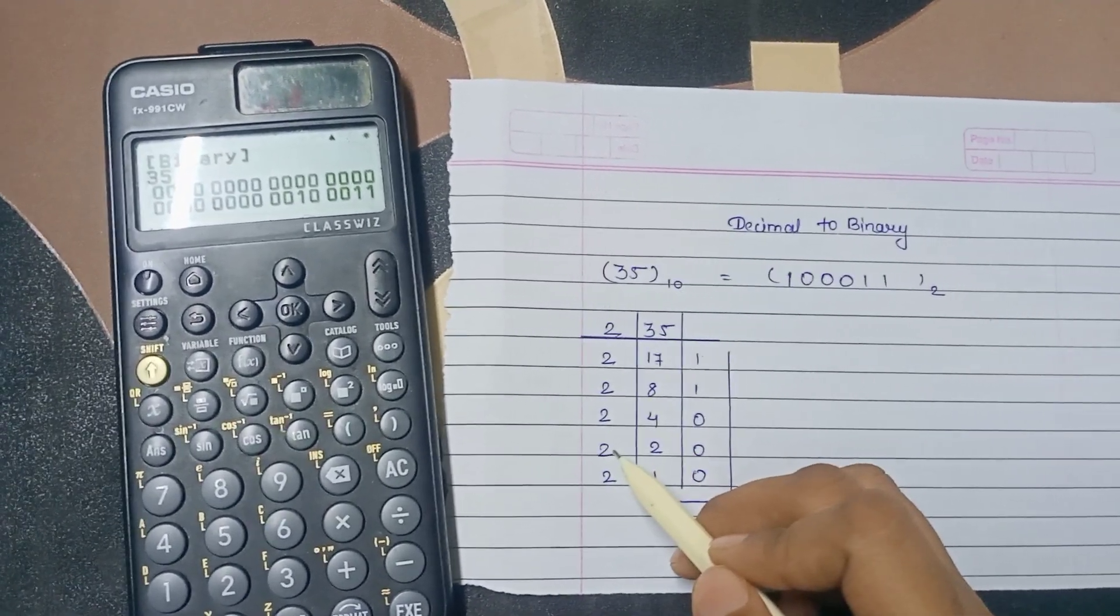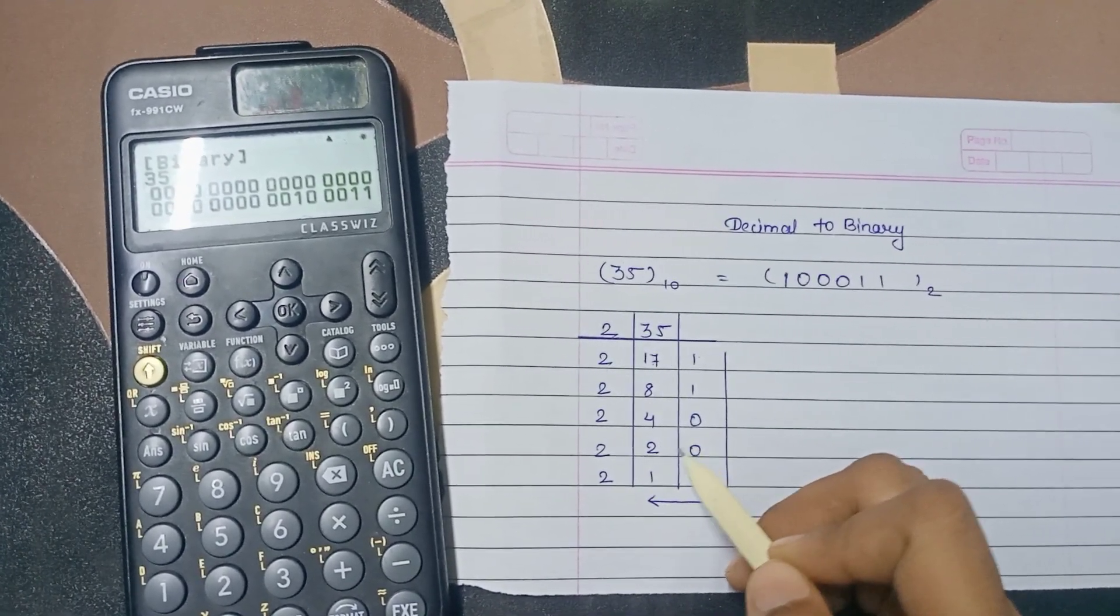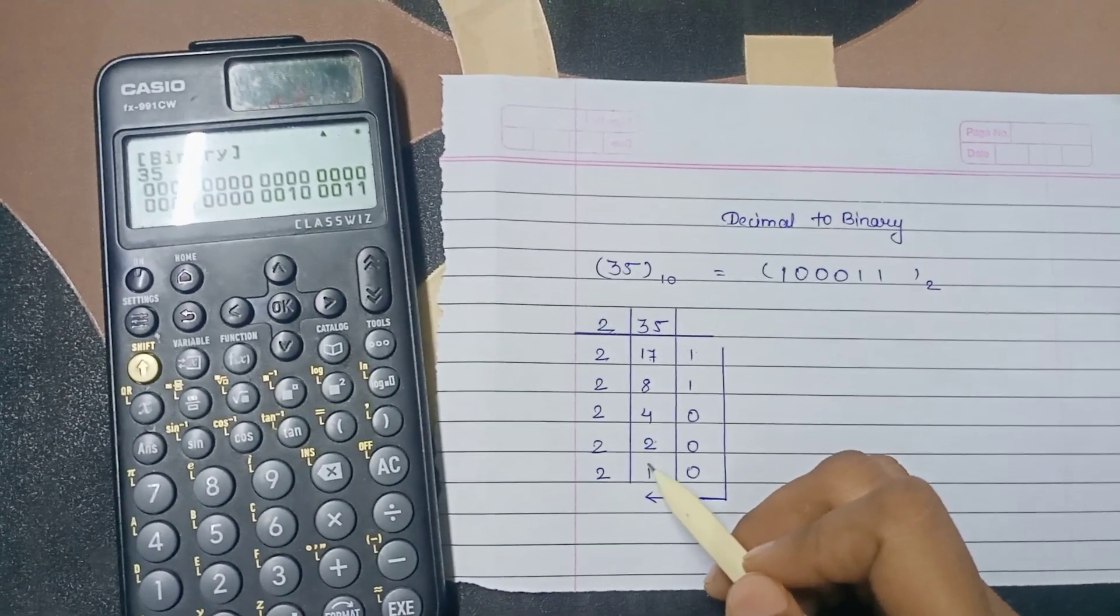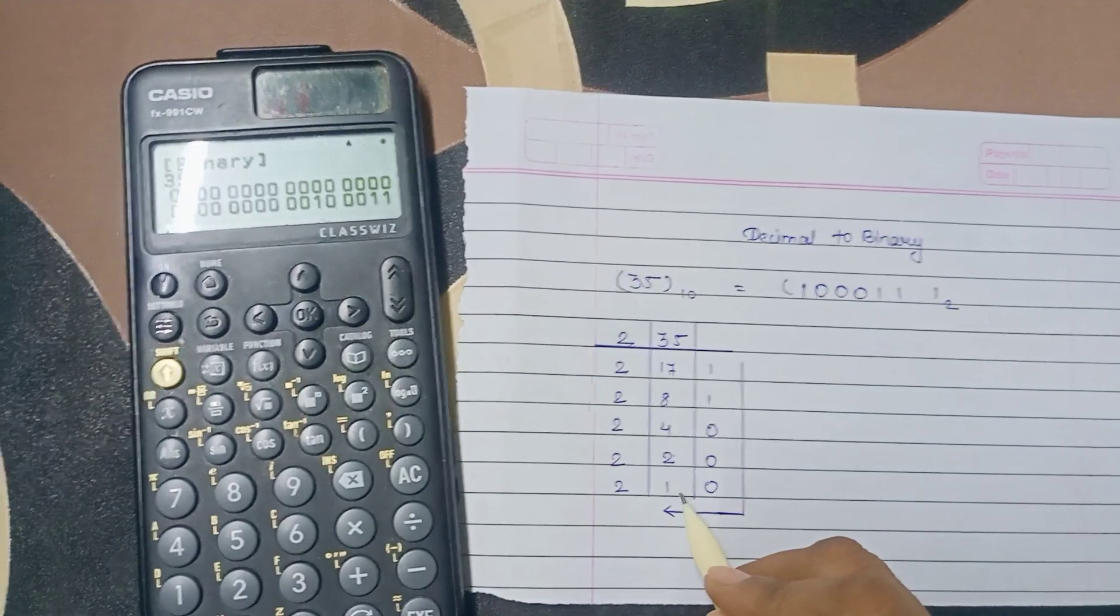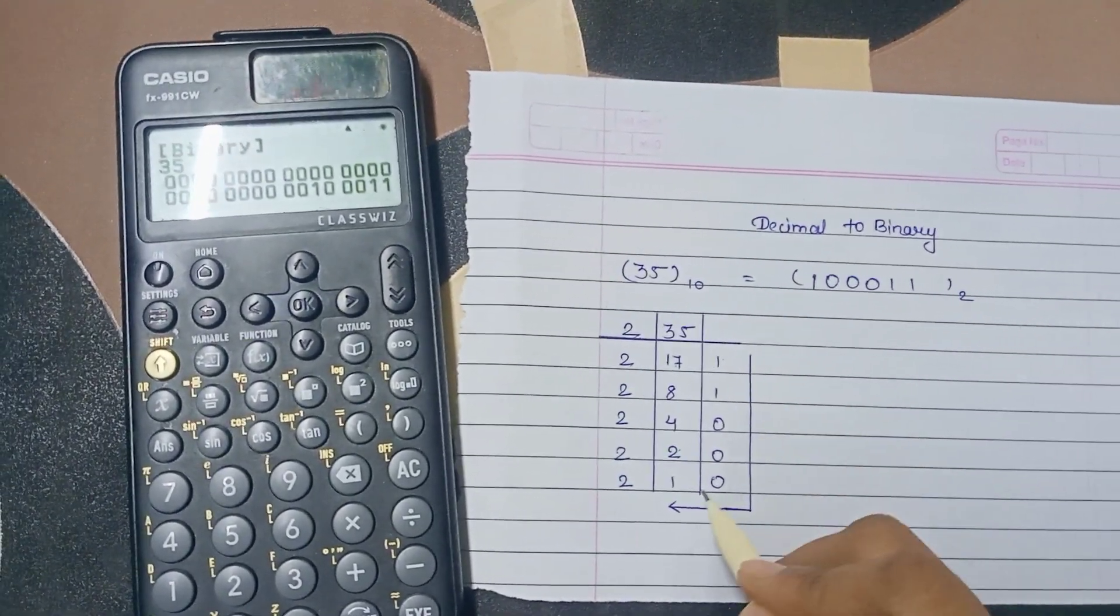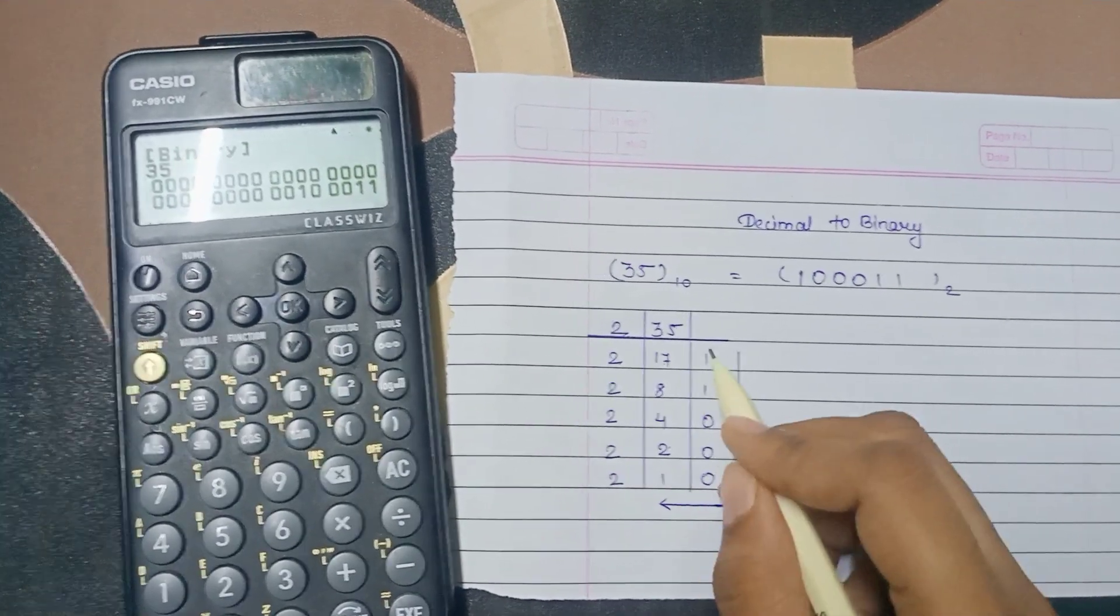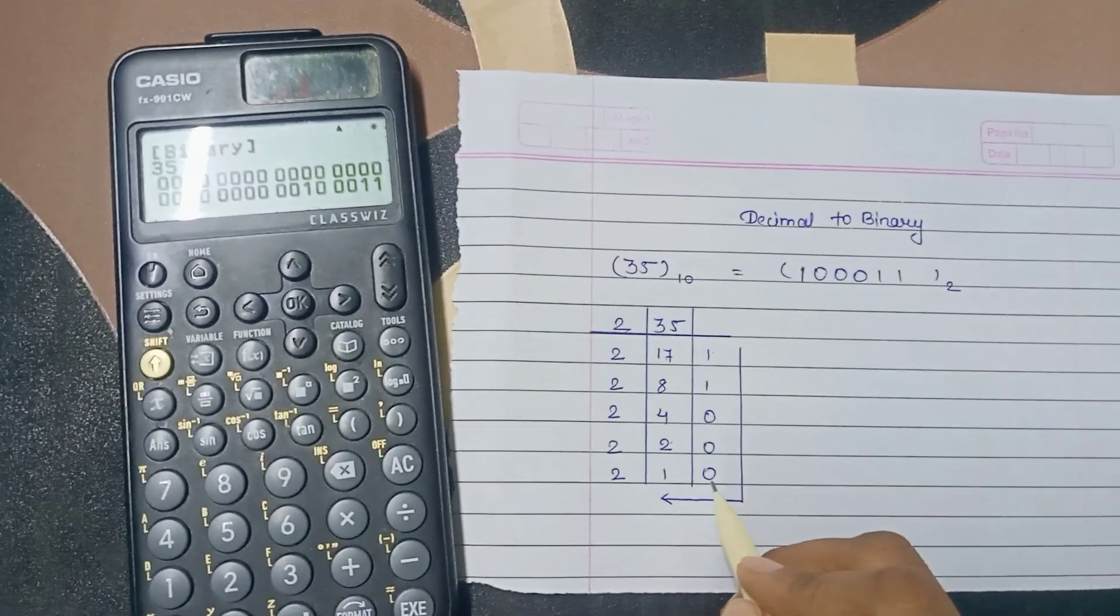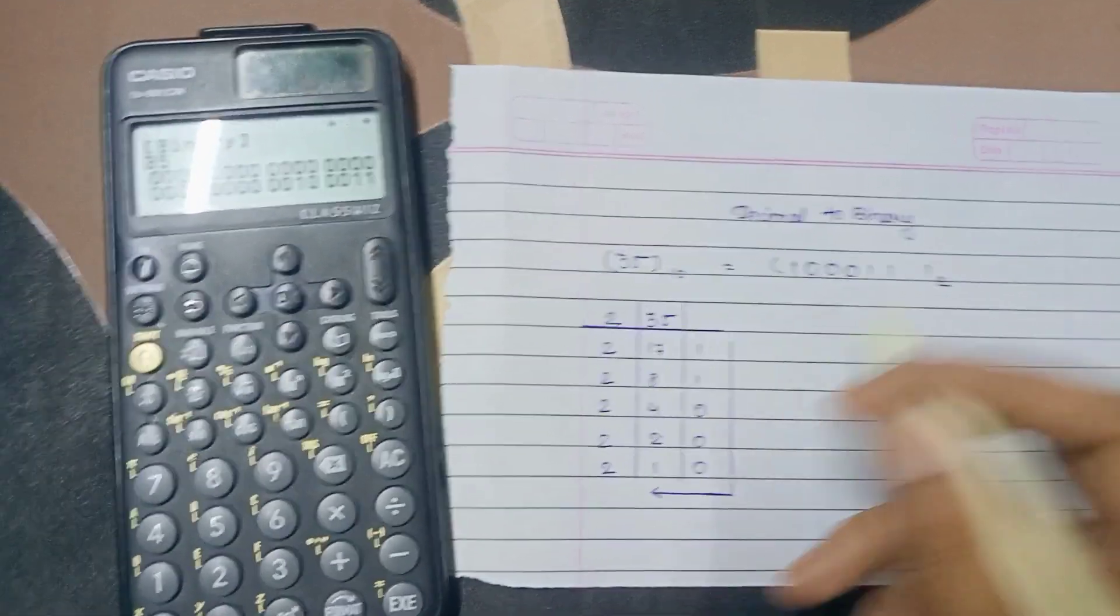4 divided by 2 is 2 remainder is 0 and 2 divided by 2 is 1 times and remainder is 0. So write the numbers in this order from bottom to top. 1 0 0 0 1 1 Thank you.